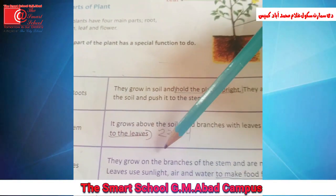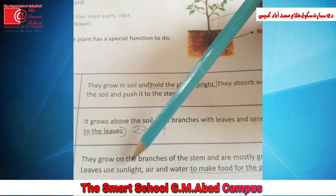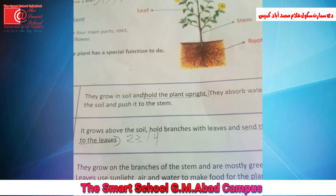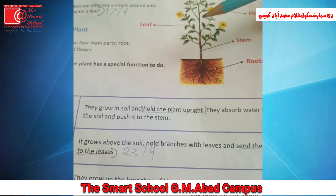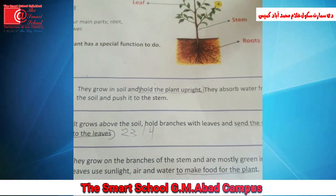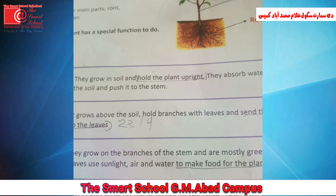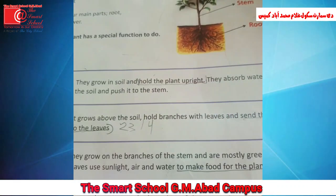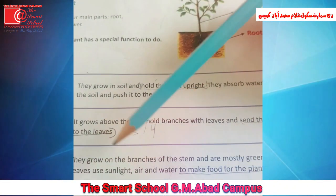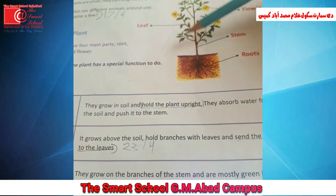Then leaves. They grow on the branches of the stem and are mostly green in color. Leaves use sunlight, air and water to make food for the plant. اب جو leaves کا کام ہے کہ پہلے تو وہ ان branches پر grow کرتے ہیں۔ پھر یہ جو پانی انہوں نے stem سے لیا ہوتا ہے اس پانی کو، sunlight کو، اور ہوا کو یوز کرتے ہوئے یہ پودے کے لیے food تیار کرتے ہیں۔